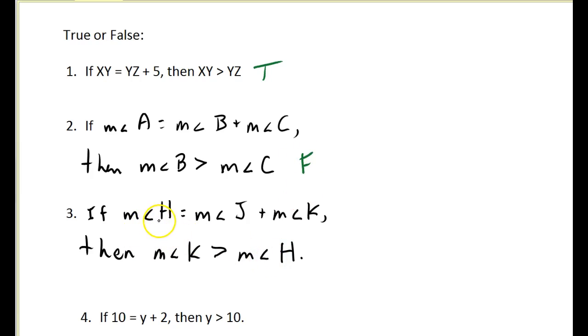How about this? If angle H is equal to angle J plus angle K, then angle K is greater than angle H? No. Because we have to add angle J to K to equal H, that means that angle K is actually less than angle H. So that is false.